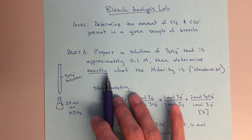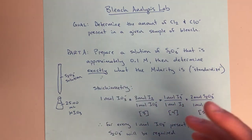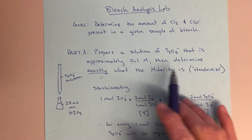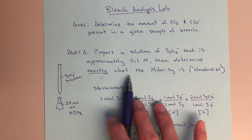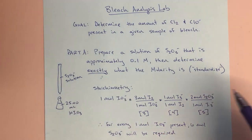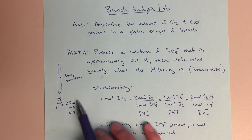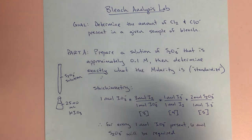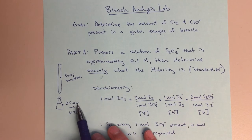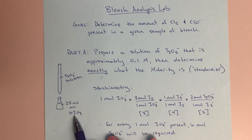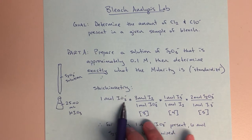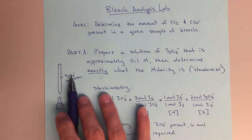Then we're going to determine exactly what that molarity is, because there's a little variation on the balances and we might not have weighed out exactly the amount we wanted — which is okay. This process is called standardizing. The way we standardize is by doing a titration using a known concentration of KIO3. We'll provide that KIO3 solution in lab with a known molarity. Taking 25.00 mL of it lets us figure out exactly how many moles we're putting in.